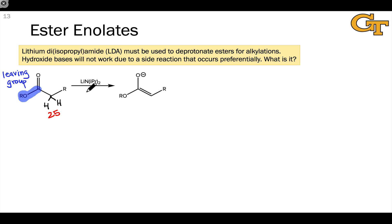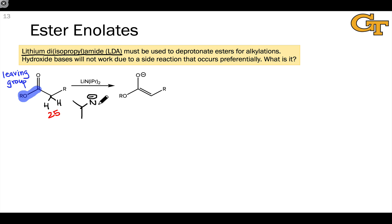If we want to generate an ester enolate quantitatively — in other words, 100% — without worrying about nucleophilic acyl substitution, the most common and straightforward solution is to use a very sterically bulky base. LDA, lithium diisopropylamide, fits the bill. It has a strongly basic anionic nitrogen atom linked to two bulky isopropyl groups, so it is poor at nucleophilic addition but great at removing alpha protons.